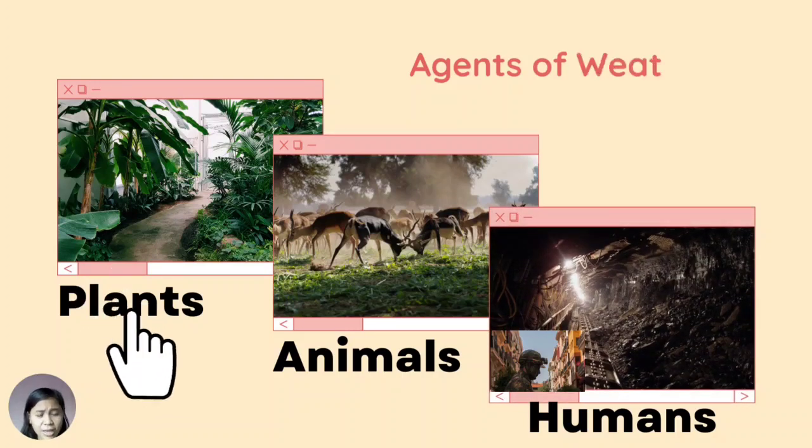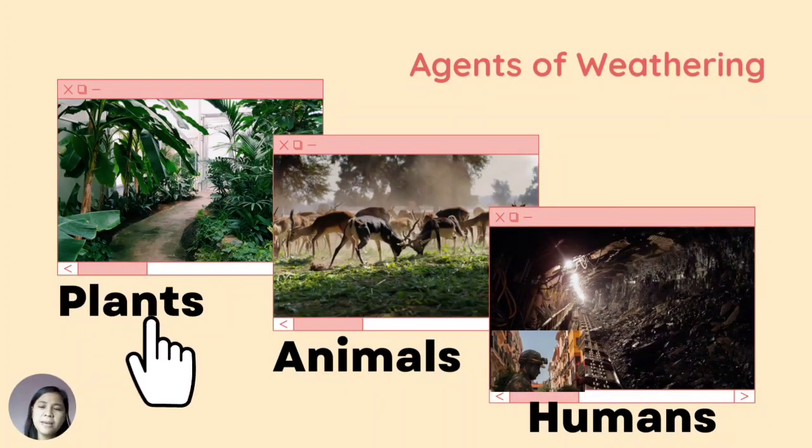We also have plants. Some plants like lichens, ferns, and mosses can also trigger weathering. It can grow on rocks and cause them to break into pieces. Eventually, metabolic or life processes of these plants will cause the gradual breakage of rocks into smaller pieces.